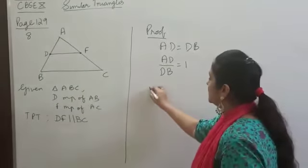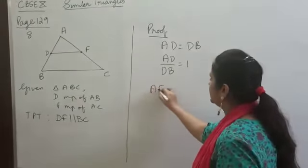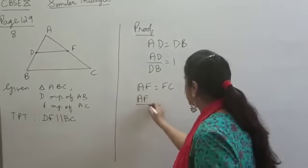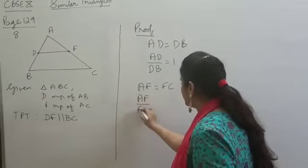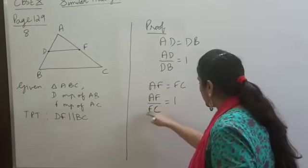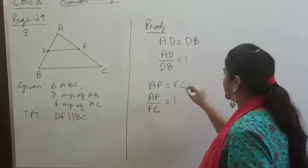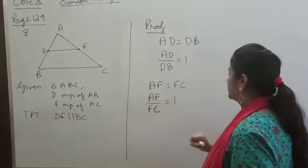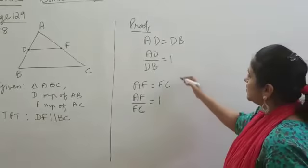Again, AF is equal to FC. Why? Because F is the midpoint of AC. So, from this we have AF by FC is equal to 1. Just bring this for division. AF is equal to FC can be written as AF by FC is equal to 1.